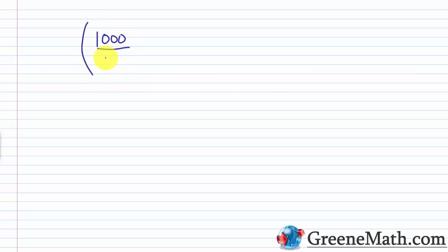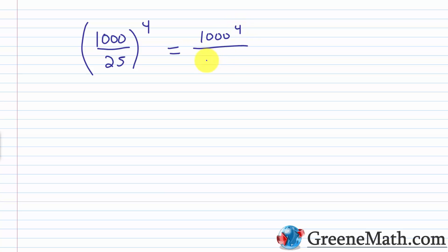Another example: 1000 over 25, raised to the fourth power. Since 1000 divided by 25 equals 40, this would be 40 to the fourth power. Alternatively, you could write this as 1000 to the fourth power over 25 to the fourth power — it's the same either way.